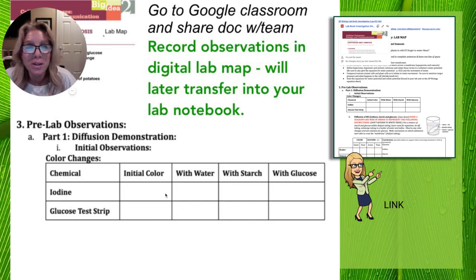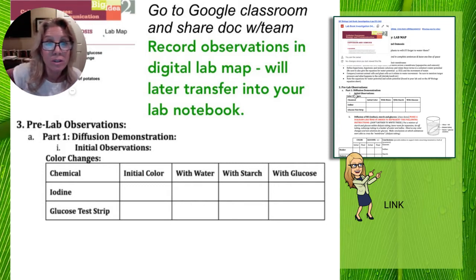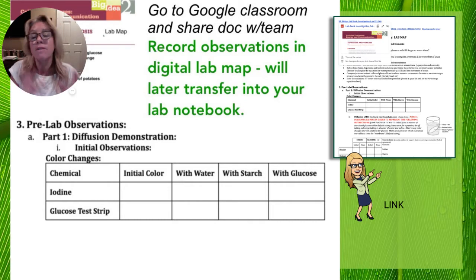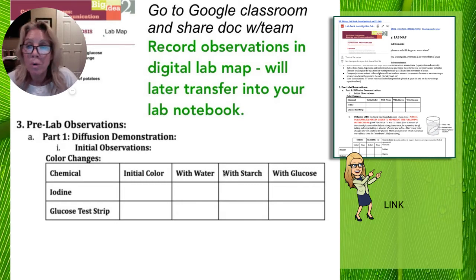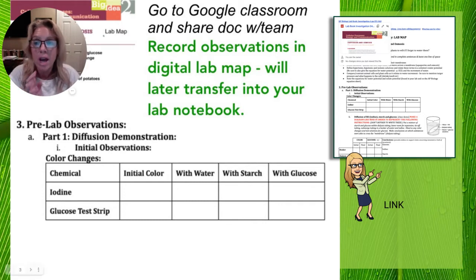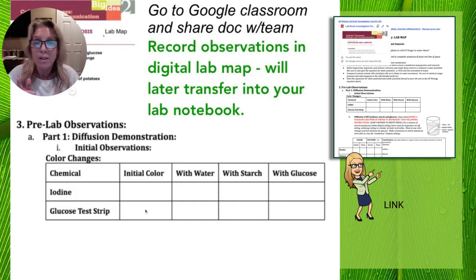You're going to open up your lab map — there's a link to it — and I encourage one member of your lab team to open it and share it with the entire team so you can record initial observations and transfer them into your actual lab notebook. You're going to look at iodine, see its initial color, mix it with water, with starch, and with glucose to see what colors it changes. You'll also dip a glucose test strip — normally used in urinalysis — and look to see how it changes in these different solutions.